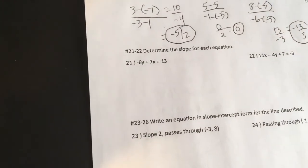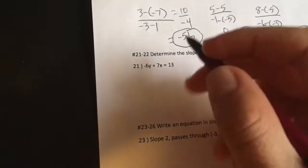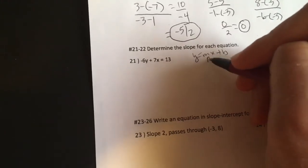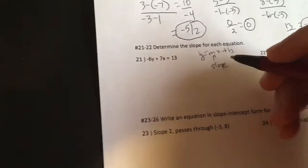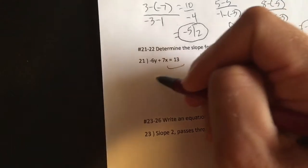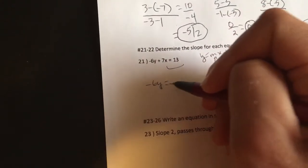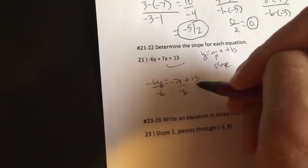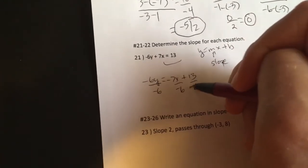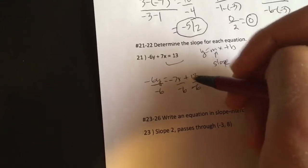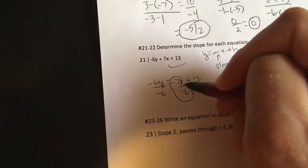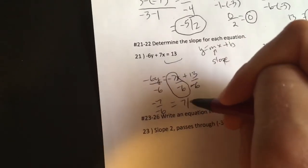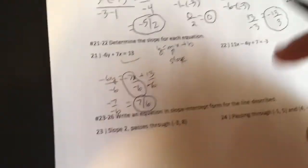All right. Determine the slope for each equation. Well, first thing I do, I can get it. Y equals MX plus B form. Remember, this is the slope. So that's probably my best course of action. So I'm going to move that over. I have negative 6Y is equal to negative 7X plus 13. I am going to divide by what's attached to Y. I really only care about this number. I don't care about the Y-intercept at all. I care about that ratio, negative 7 over negative 6. Negative 7 over negative 6 is a positive 7 over a positive 6. That is my slope.